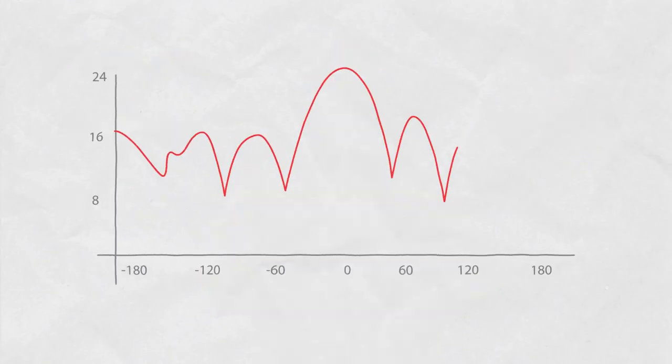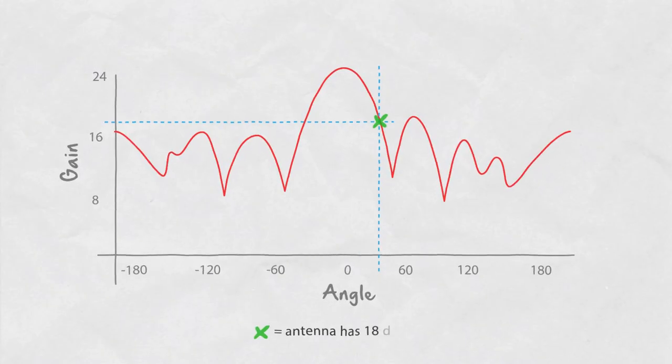An XY plot has two axes: X for angle and Y for gain. Gain at a particular angle is read by intersecting the points on the plot with the axes.